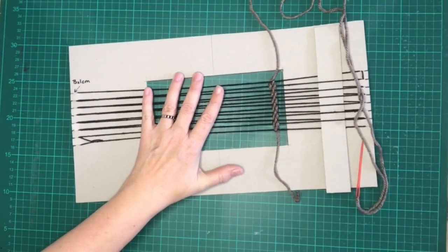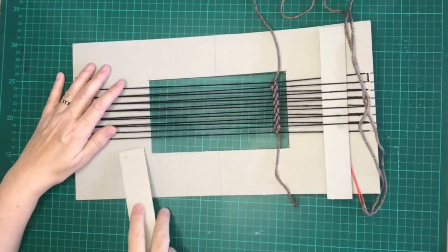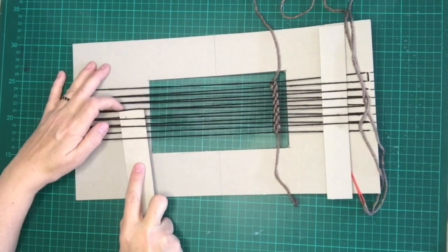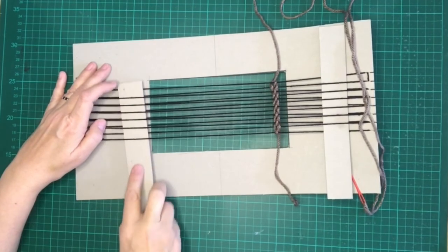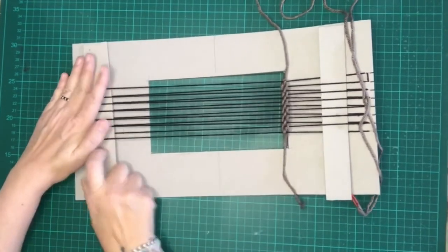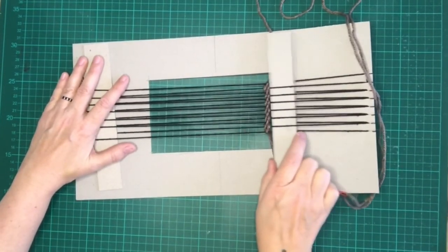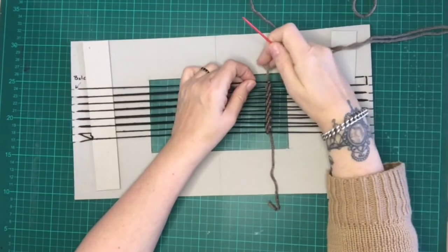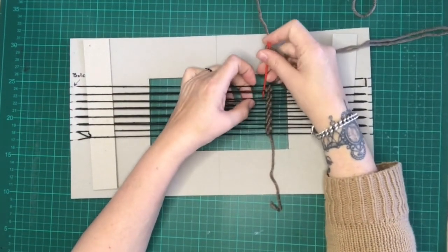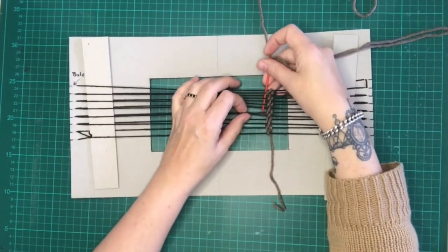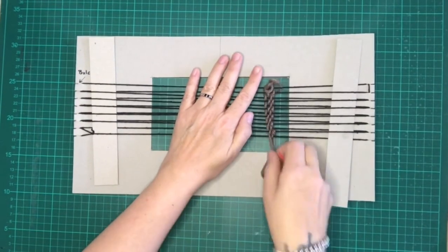I've created these little battens out of some more cardboard and it neatens up the weaving as we go. I've got one at the top end and one at the bottom end. It neatens it up, presses the weaving together, and helps to assess if I've got the tension right too.